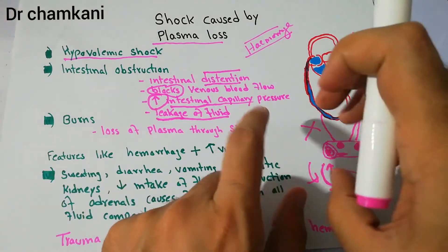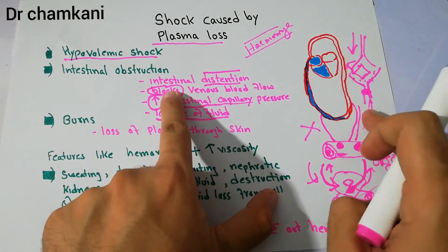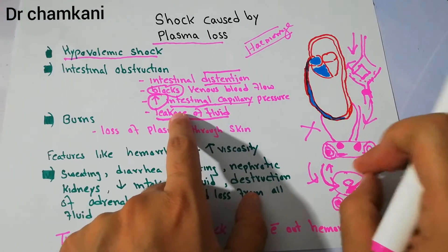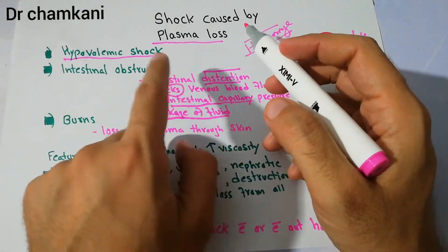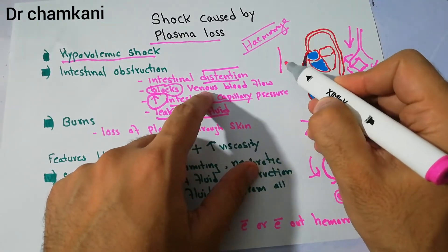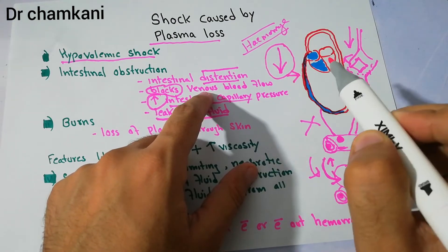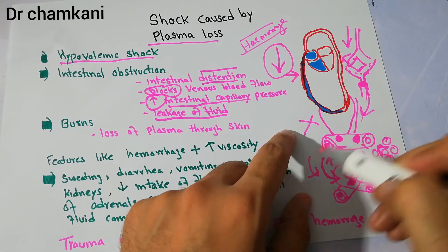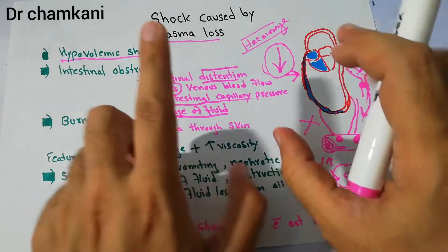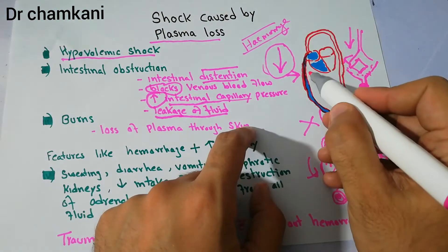Plasma leakage occurs because obstruction causes distension, distension blocks blood flow — blood can come in but cannot go back — creating back pressure that increases capillary pressure and causes plasma leakage. This leakage leads to hypovolemic shock because plasma is leaking out, decreasing the volume of blood available for circulation.